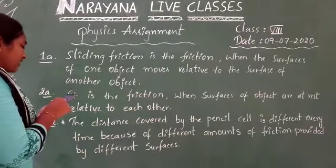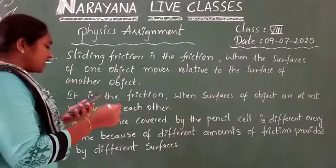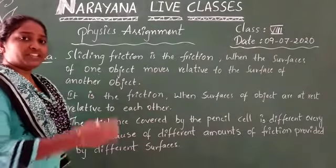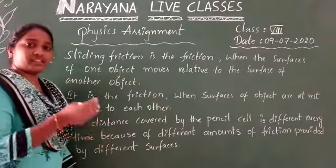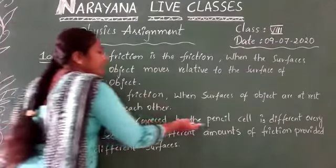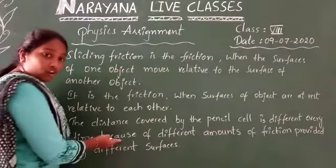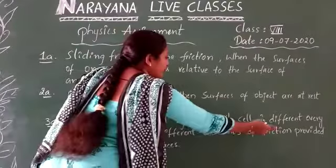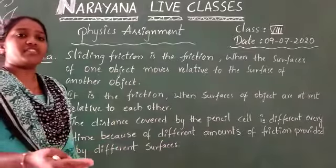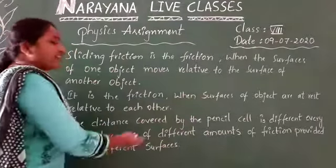And the third question is, explain why is the distance covered by the pencil cell different on different surfaces? Yes, it is correct. The pencil cell applies a different force on different surfaces. The distance covered by the pencil cell is different every time because of different amounts of friction provided by different surfaces. Each and every surface will provide a different friction. That is the reason the distance is different.